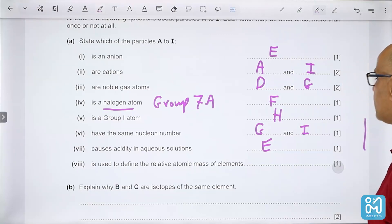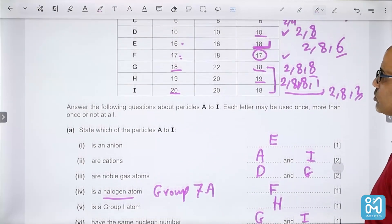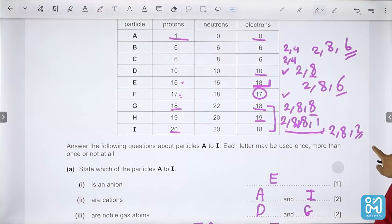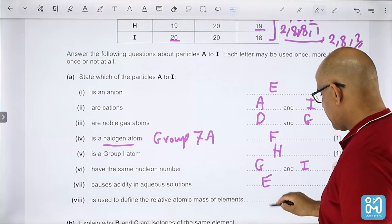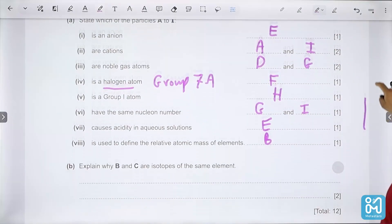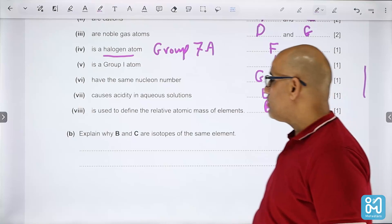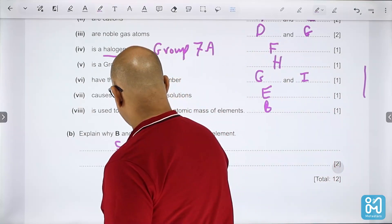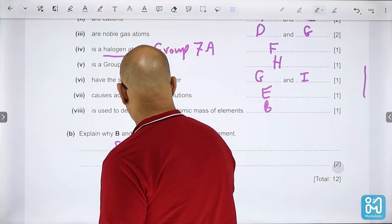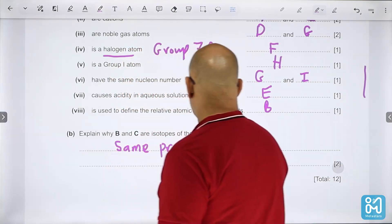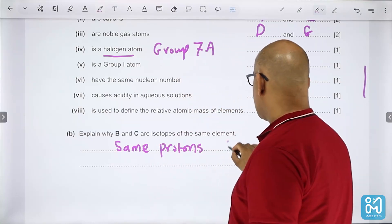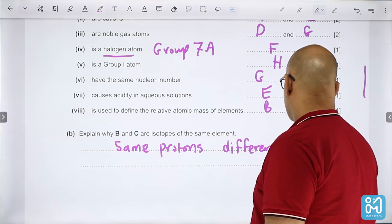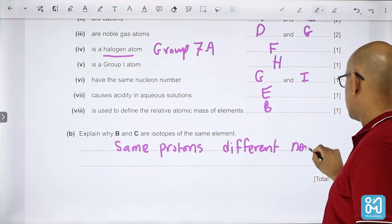It is used to define the relative atomic mass - it's carbon-12, which is B. Explain why B and C are isotopes of the same element: they have the same proton number but they have different number of neutrons.